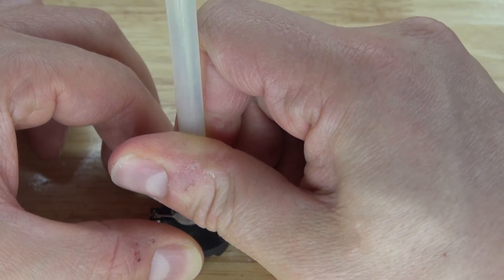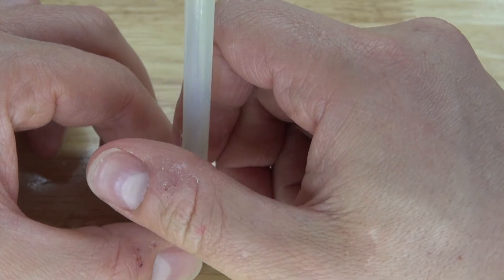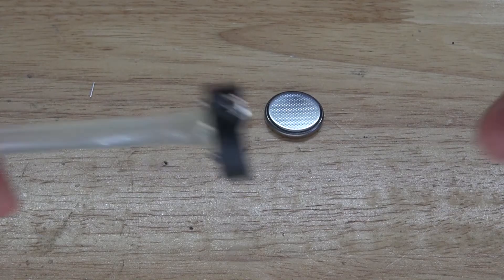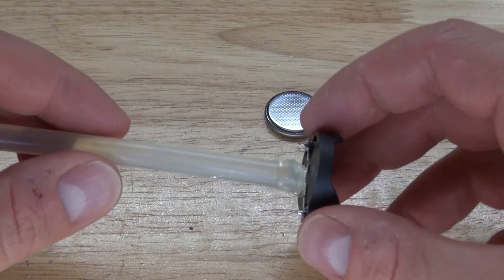Press it in firmly, and make sure you hold the glue stick upright in order for it to solidify straight. And there we go, it should look just like this.